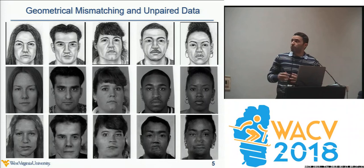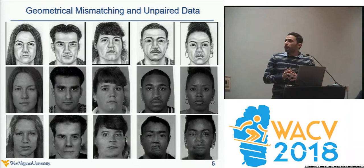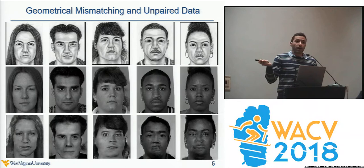But this doesn't solve our problem because of another issue: geometrical mismatching. If you look at hand-drawn sketches and their corresponding ground truth photos, the edges don't overlap when the sketch and photo are aligned. The generator becomes confused about how to move the edges during training, and training a standard GAN on this dataset results in too many artifacts and distorted images.